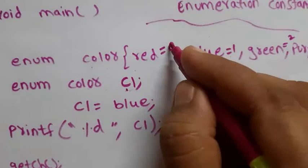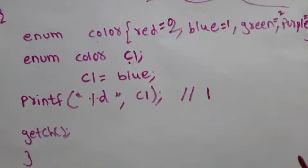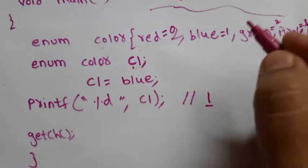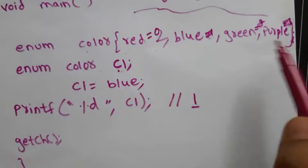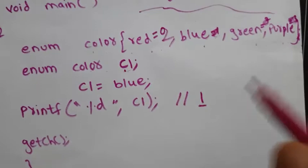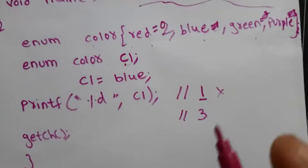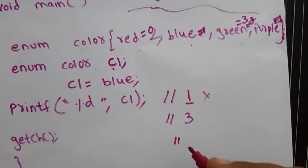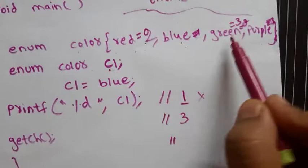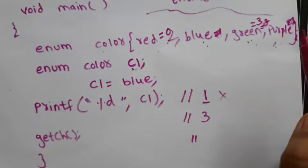If I don't want red to be zero, I can assign my own value — for example, red = 2. If I had not given any custom values, the compiler would assign 0, 1, 2, 3. Since I gave red = 2, the next values become 3, 4, 5. So if I print purple now, it will print 4, not 1, because green becomes 3 and purple becomes 4.